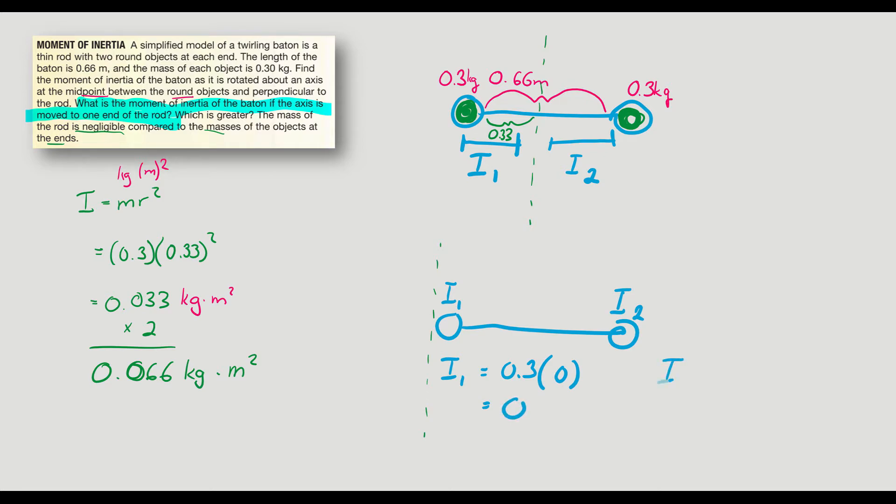That's awesome. The second one, well, now the radius is the full 0.66. So we have the mass times 0.66 squared. And we multiply all of that, creating a 0.13 kilograms meters squared. So we have our two different moments of inertia.